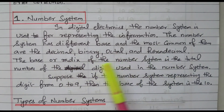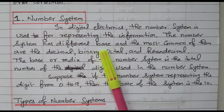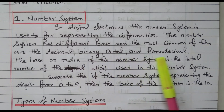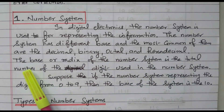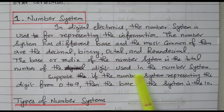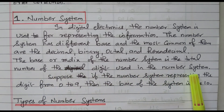There are four types available based on the number of bases — decimal, binary, octal, and hexadecimal. The base or radix of the number system is the total number of digits used in the number system.